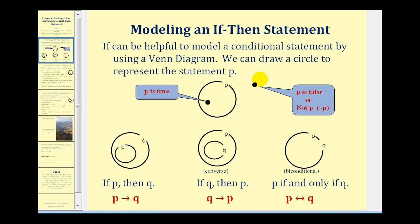So for the conditional if-P-then-Q, the Venn diagram would have set P inside set Q, guaranteeing that if P is true, Q would also be true.